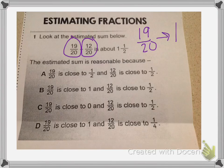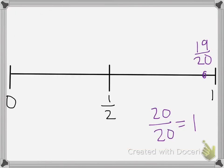The other fraction in the problem is 12 twentieths. If I go back to my number line, I know that 12 twentieths would be close to half but a little bit more than half.